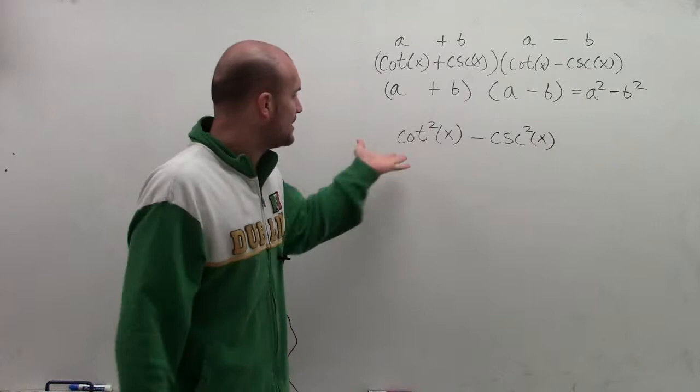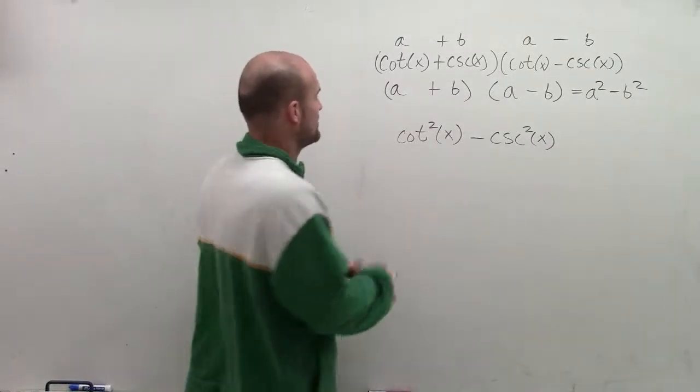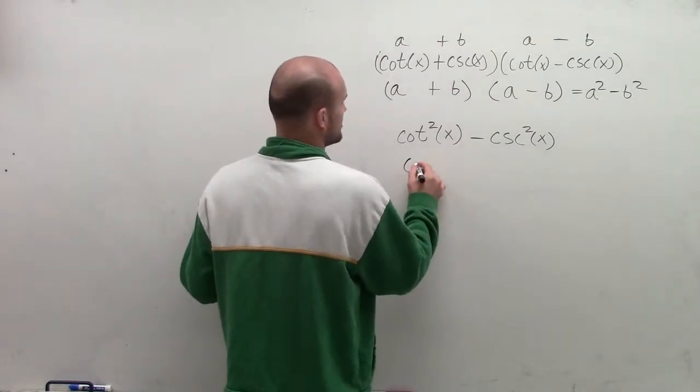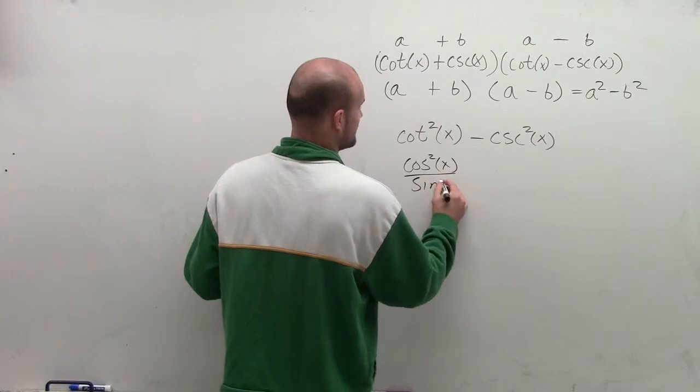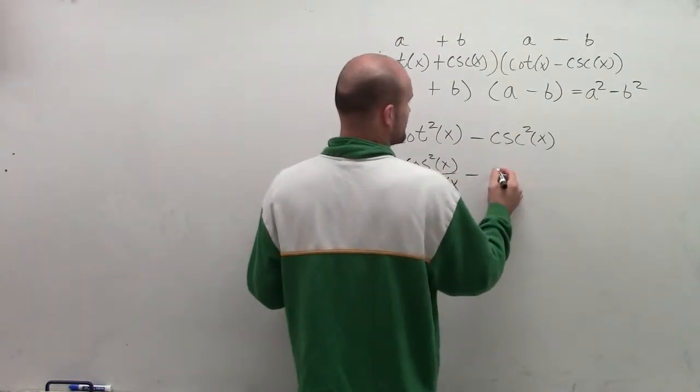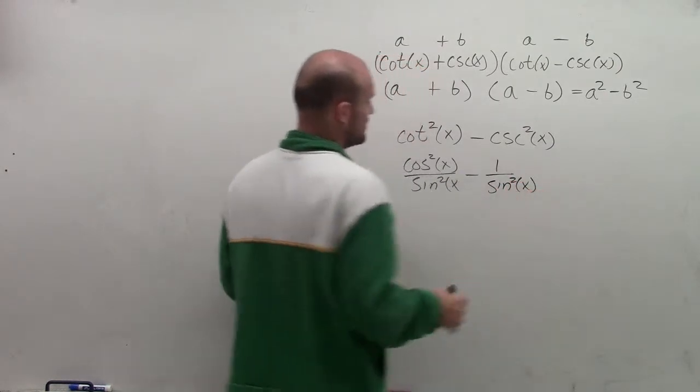So therefore, now by looking at these, I want to see, all right, can we rewrite these? Are they going to have the same denominator? Well, remember cotangent is going to be cosine squared of x divided by sine squared of x. And cosecant is going to be 1 over sine squared of x.